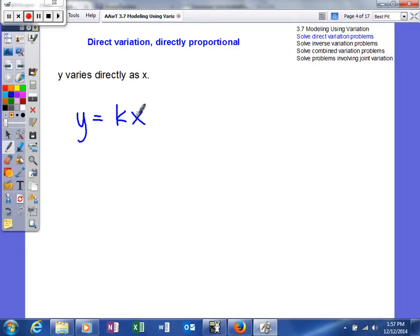K always goes in the numerator. If something varies directly, it will go in the numerator on the other side of the equation. So, that's direct variation.